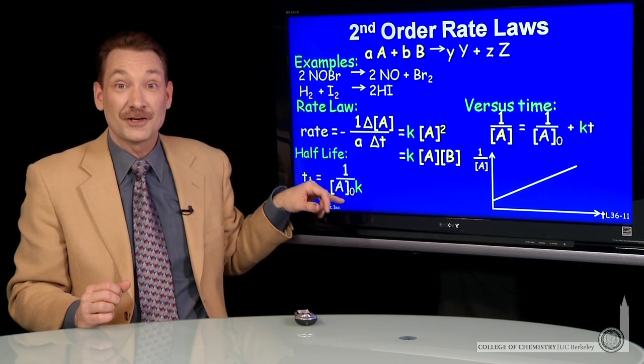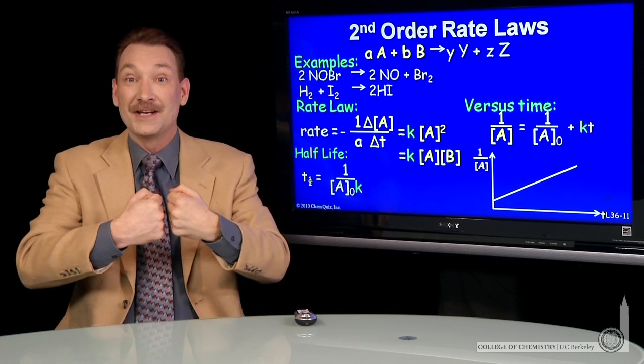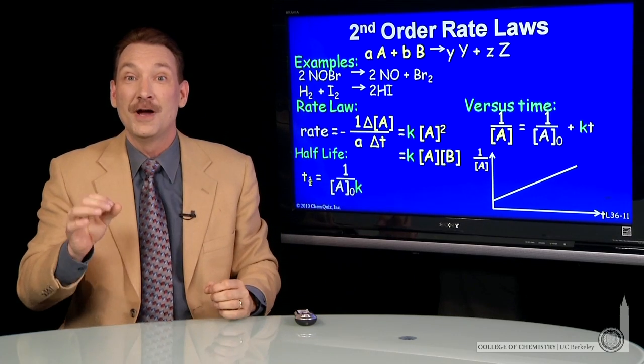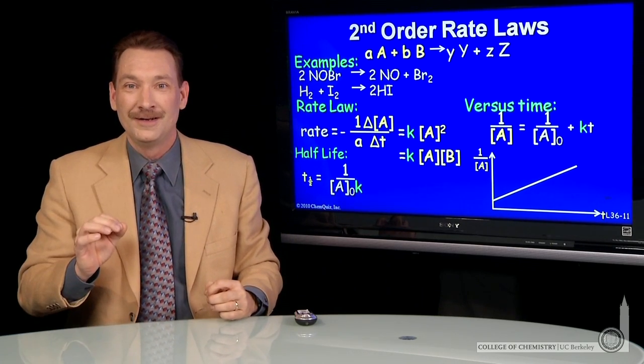So the frequency of collisions is reflected in this half-life. If you have a high initial concentration, you'll have high initial collisions, and that will give you a low half-life.